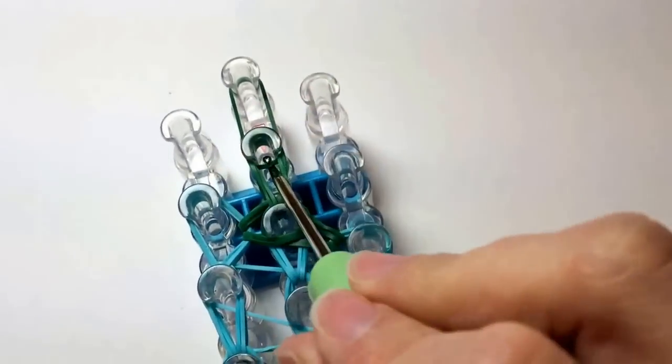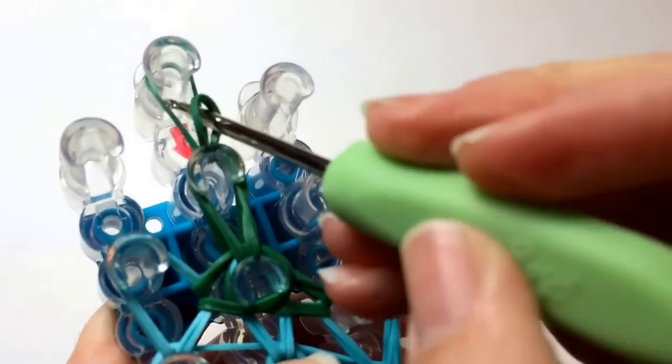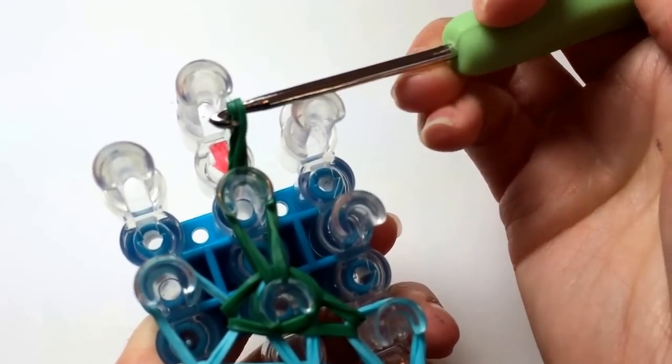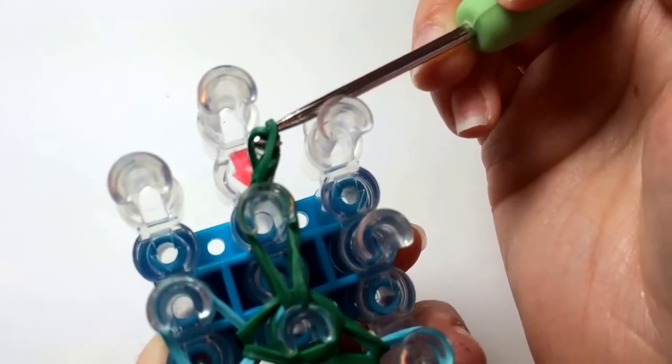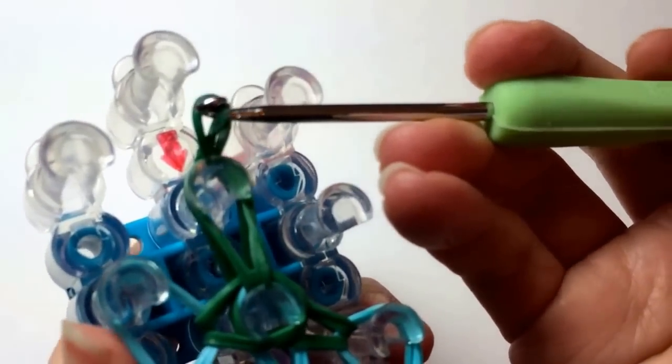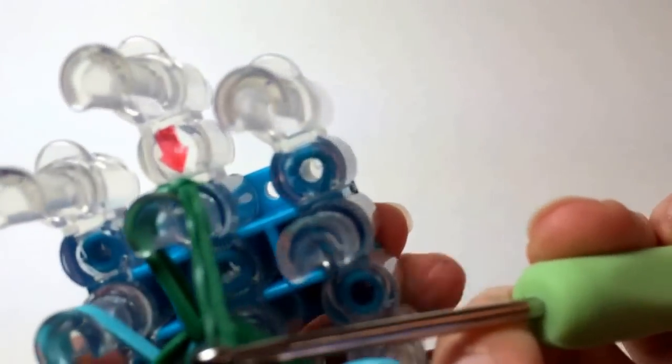And then this last one will be the loop that we use to connect our Christmas lights to a bracelet, a necklace, you can make a garland from these, whatever you'd like. So I took the bottom one, I'm putting it through the center of the top, and pulling to create a knot.